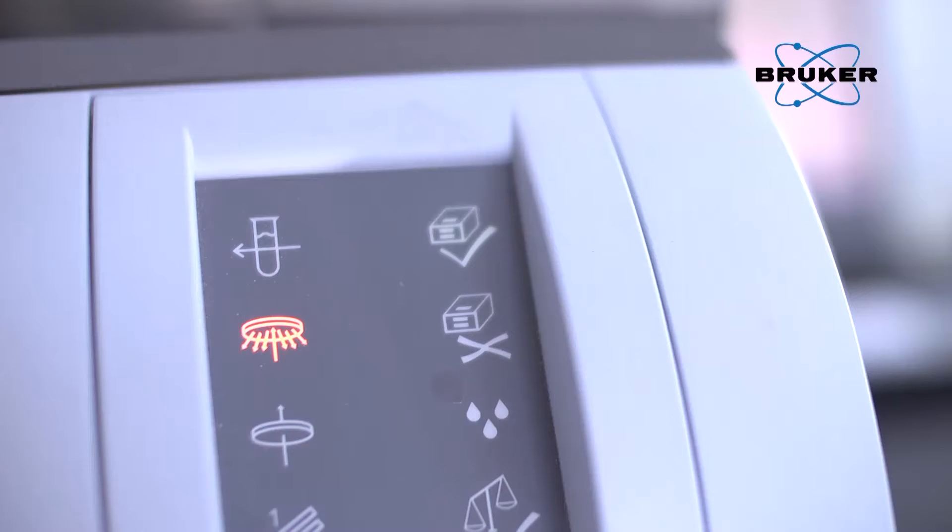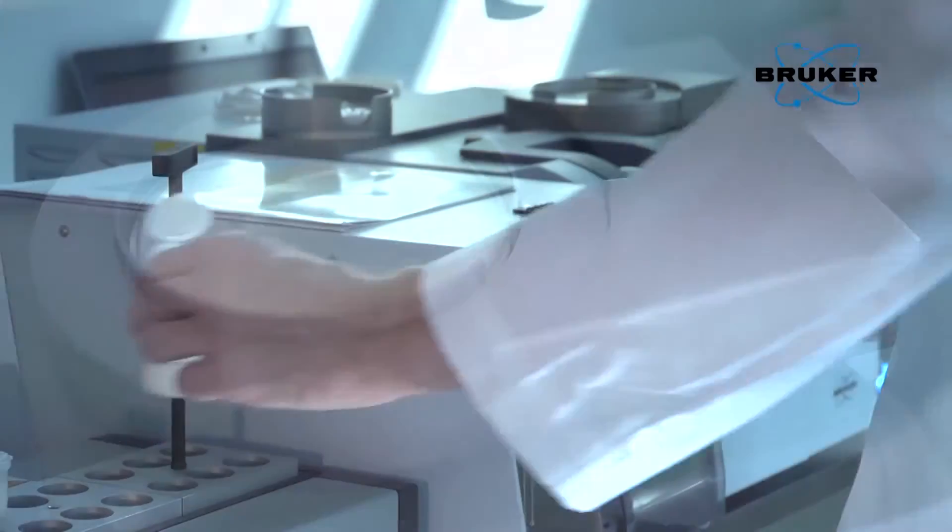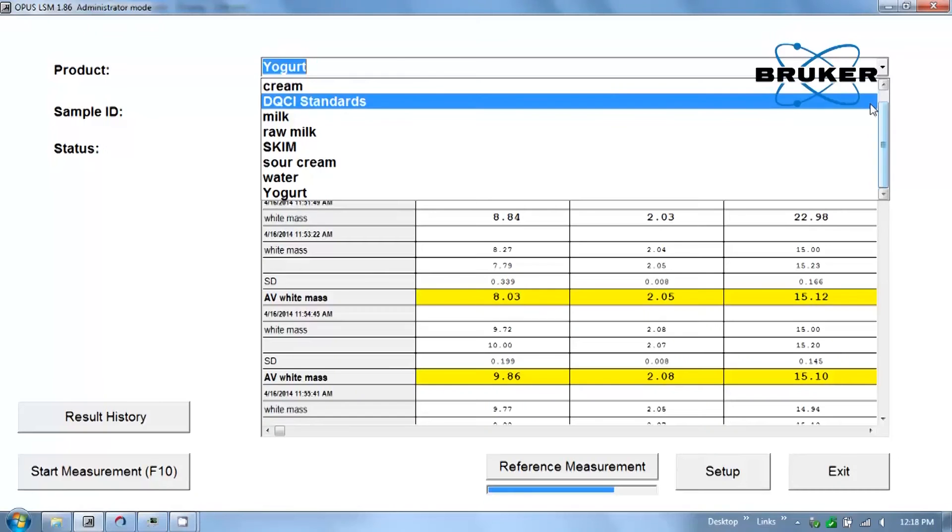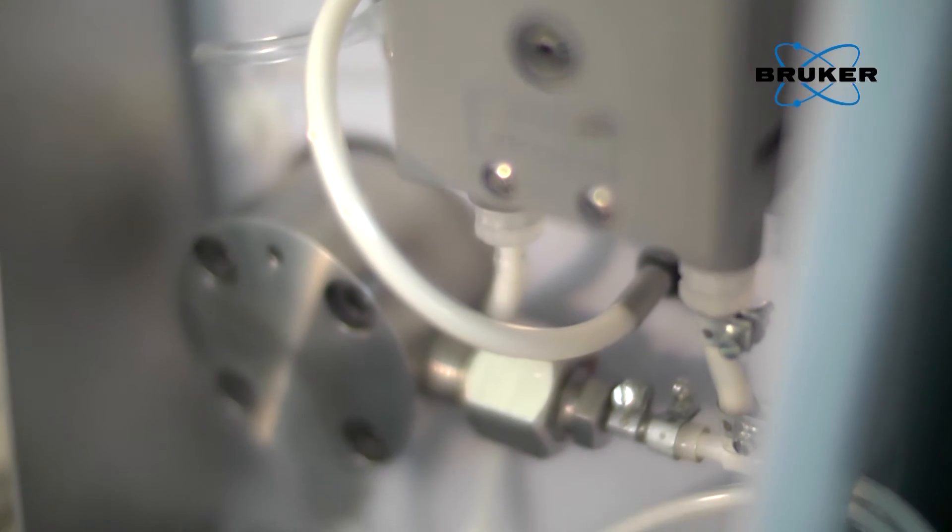While the measurement is running, you can place a fluid milk, whey, or cream sample. Select the product, in this case milk with two percent butterfat, from the drop-down menu and start the measurement. The milk is pumped into the MPA through the homogenizer and your results appear on screen.